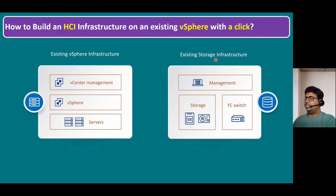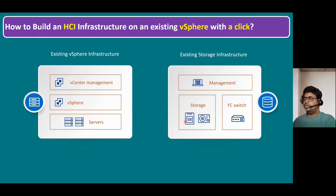When it comes to the storage infrastructure, to manage our storage we need storage devices like HDD and SSD devices, and to connect all storage devices we require a fiber channel switch. So this is our storage infrastructure. But if you want to combine server with storage, the procedure is to first activate the virtual SAN license in vSphere.